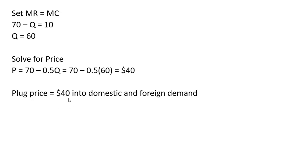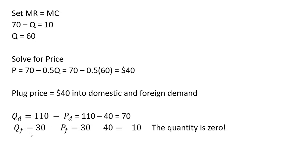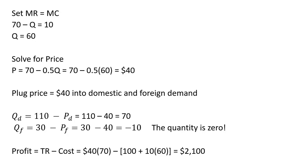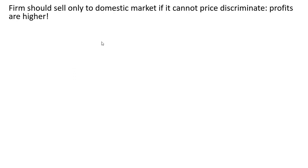Plugging the price of $40 into the domestic and foreign demand equations: domestic quantity is 70, but plugging $40 into the foreign demand gives a quantity of negative 10. Since quantity can't be negative, this indicates we should not be selling any units in the foreign market. At a price of $40, people in the foreign market will not buy any units — this price doesn't appear on their demand curve. So the firm should only sell to the domestic market if it cannot price discriminate.